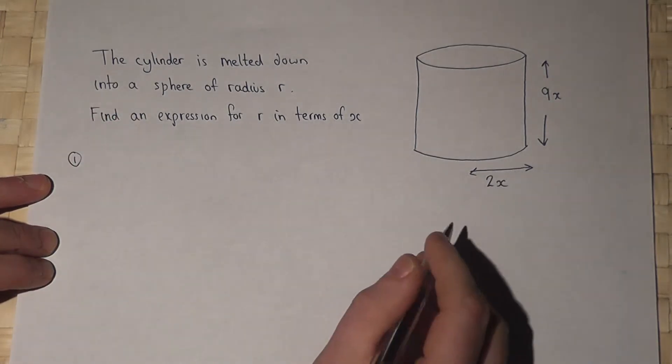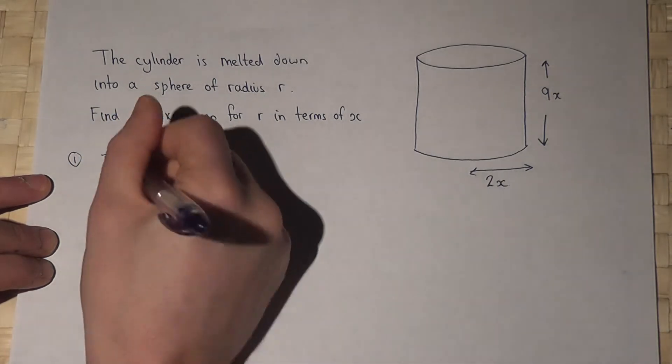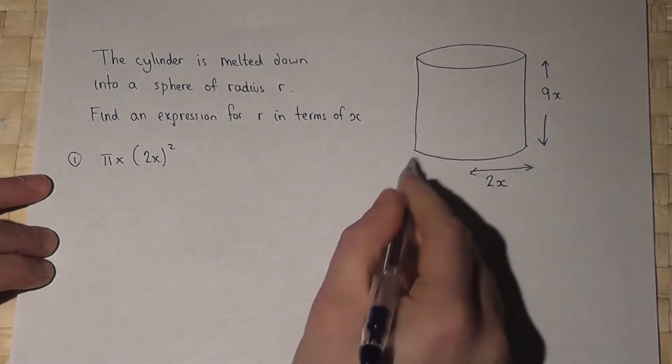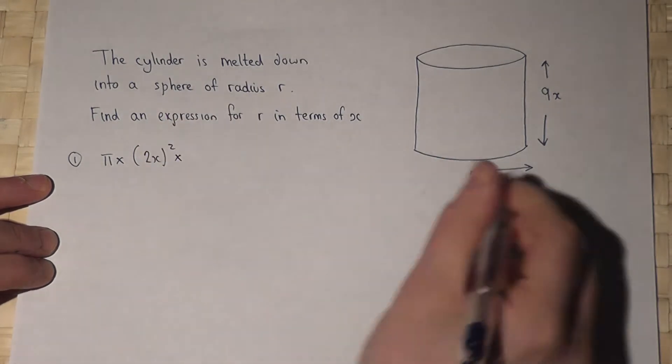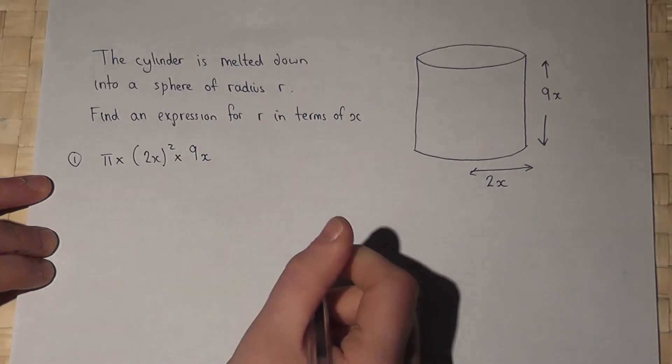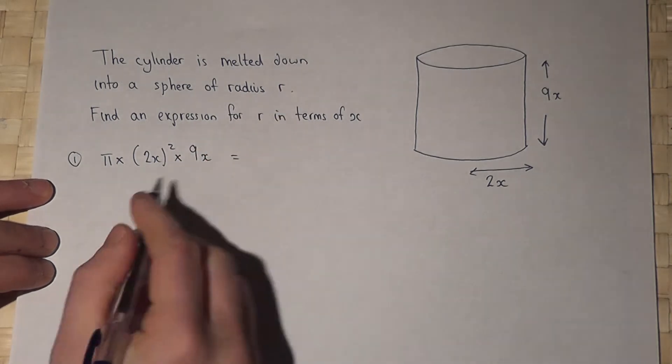find the volume of this cylinder. It's π times its radius squared, that's the area of the base, times by the height which is 9x. So that's the volume of the cylinder. Now this works out at